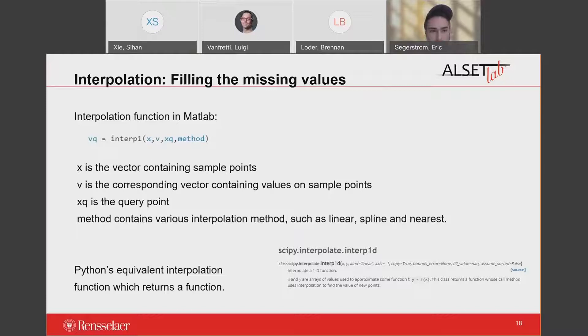Interpolation is applied when dealing with missing values. Linear interpolation is commonly used to fill the missing value with the mean value from the point before it and the point after it. The upper equation shows the interpolation function in MATLAB where the input arguments are X, V, Xq, and method. X is the vector containing the sample points. V is the corresponding vector containing values of sample points. Xq is the query point and the method is the interpolation method. Vq is the vector returned by the function that contains the corresponding value of Xq. There is also an equivalent interpolation function in Python that uses library scipy, but the difference is that the scipy interpolation returns a function. We need to substitute the query points into that function to get our desired value.